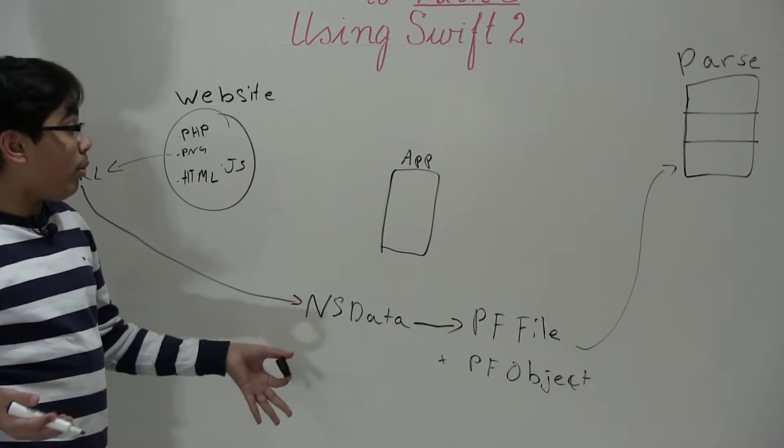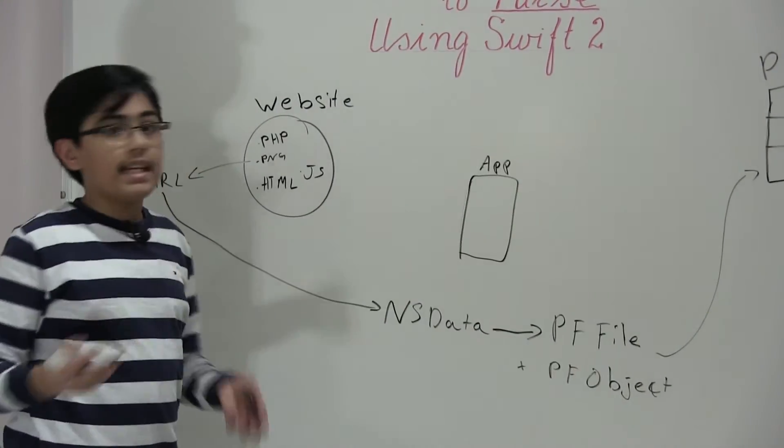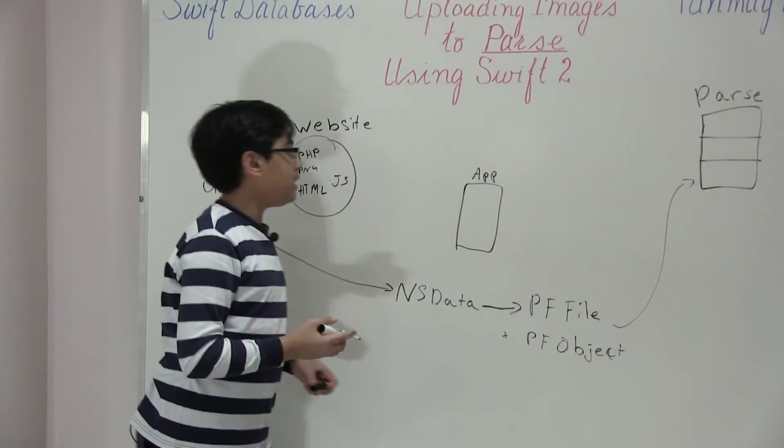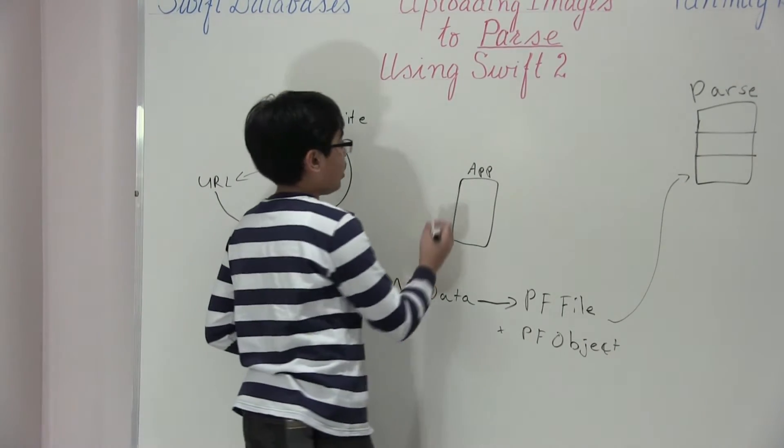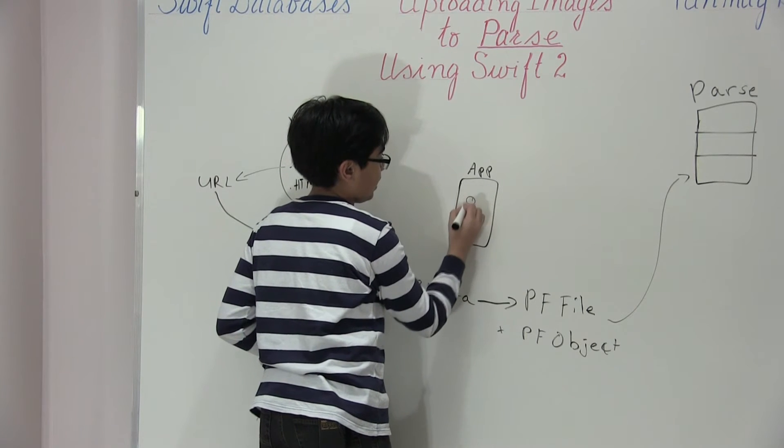And then we're going to send these over to our parse database or in more specific, our parse class. And so now what we're going to do is since we've uploaded the image, we actually have to download it and test if it works. And so what's going to happen is we're going to wait for a user to click the screen. So we're just going to pretend the user clicked over here.